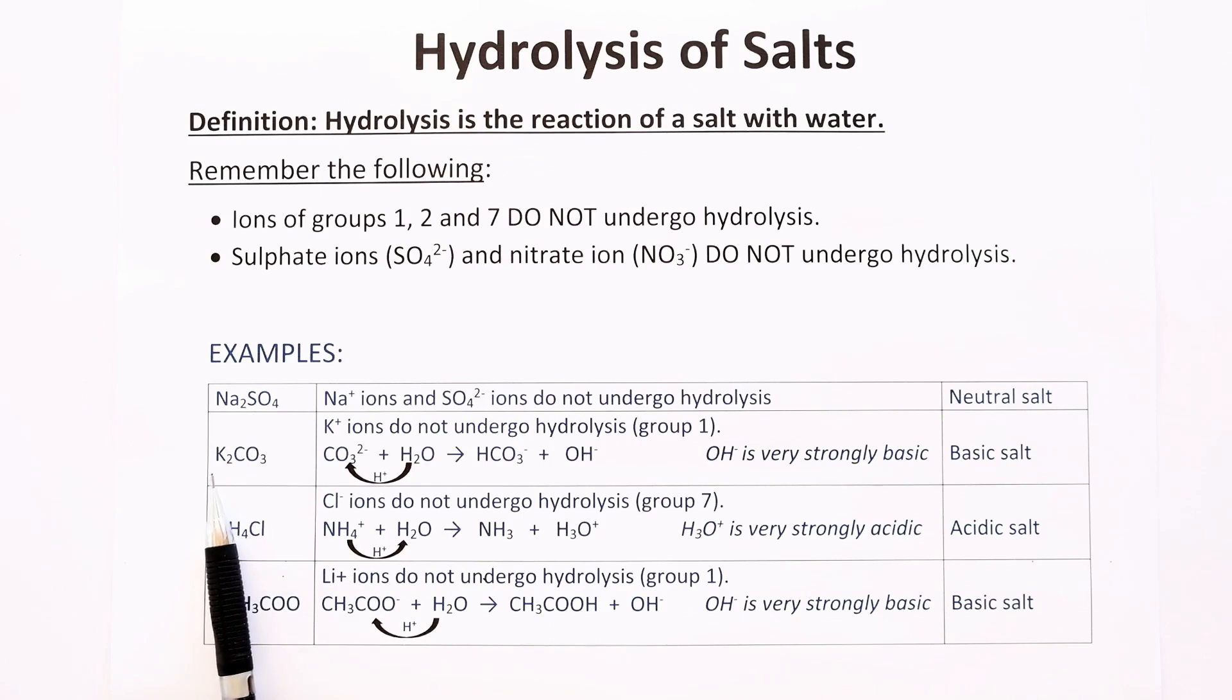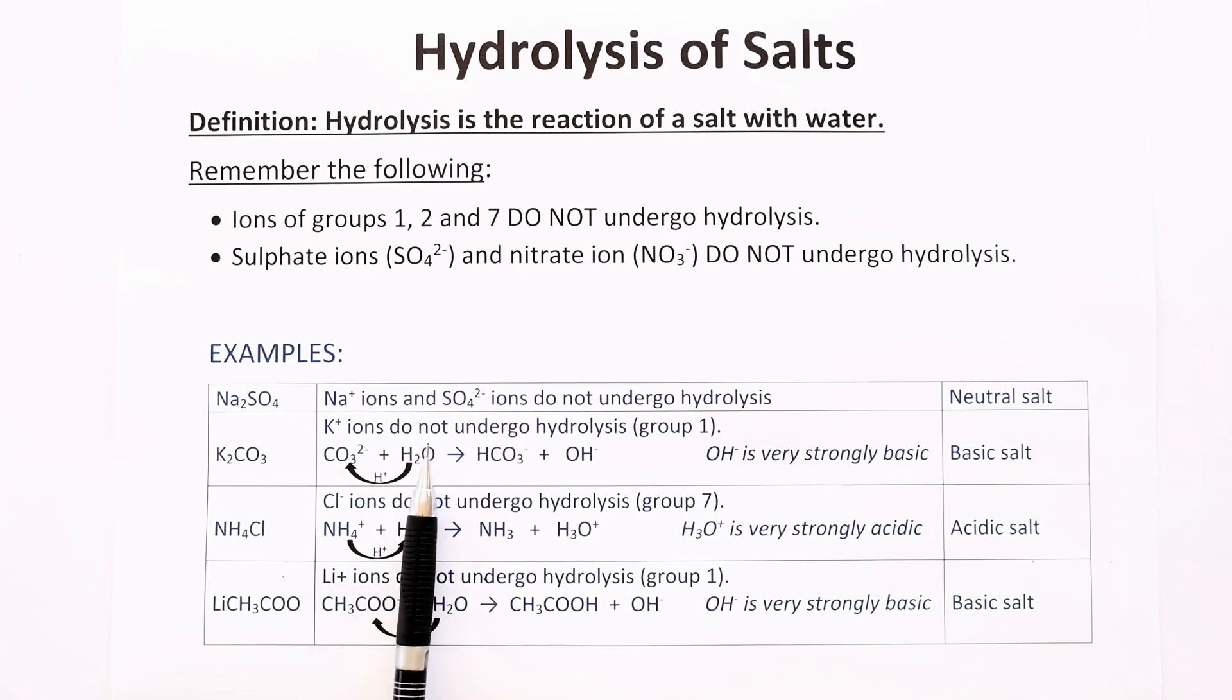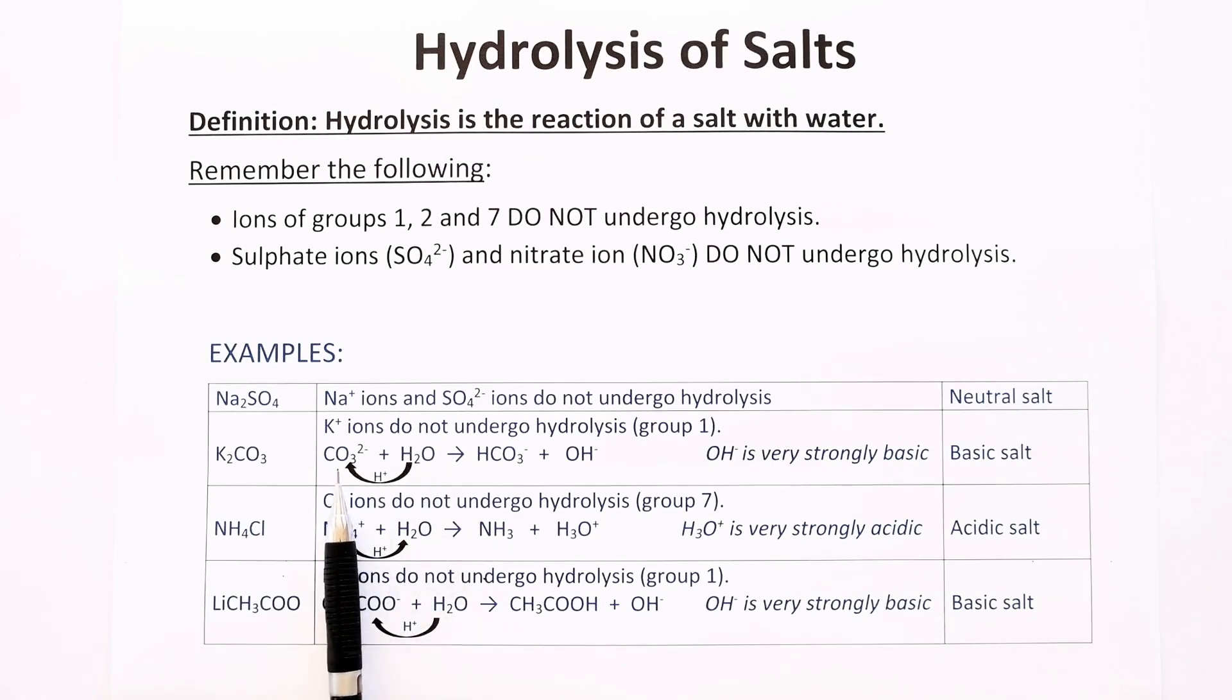The second example, potassium carbonate. Potassium ions are from group 1, so they do not undergo hydrolysis. But the carbonate ion will undergo hydrolysis. So you react the carbonate ion with the water molecule. Carbonate cannot react as an acid. It does not have protons to donate. So the water molecule will act as the acid and the carbonate will act as the base.